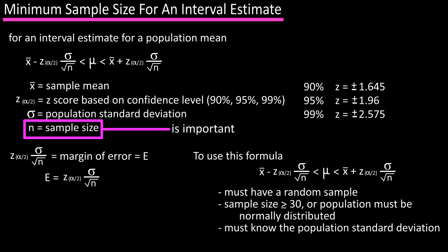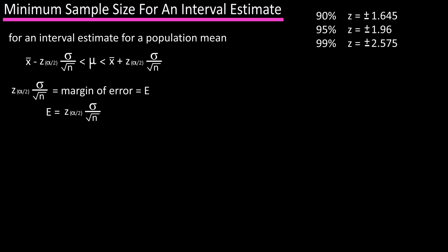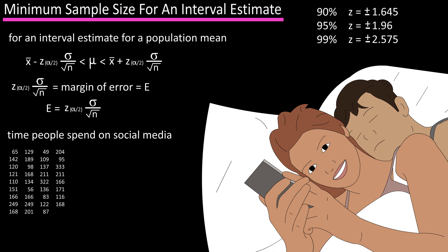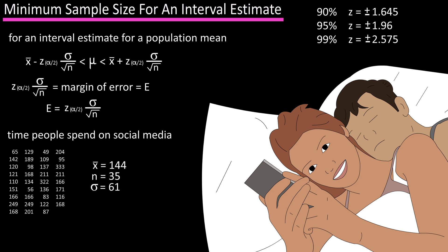The sample size plays an important part in the margin of error. For instance, in a past video, we did an example of how much time a person spends on social media in a day in minutes. The mean is 144, sample size is 35, and we're going to assume the population standard deviation is 61. On the screen are the calculated confidence intervals for the population mean using 90%, 95%, and 99% confidence intervals.